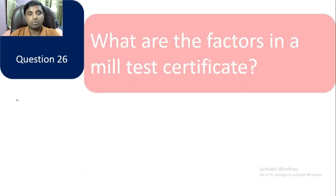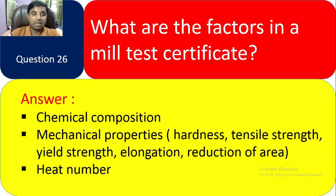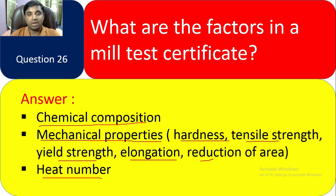Question 26: What are the key factors in a mill certificate? The important factors are: chemical composition, mechanical properties (hardness, tensile strength, yield strength, elongation, reduction of area), and heat number. All these must be checked against the applicable standard.